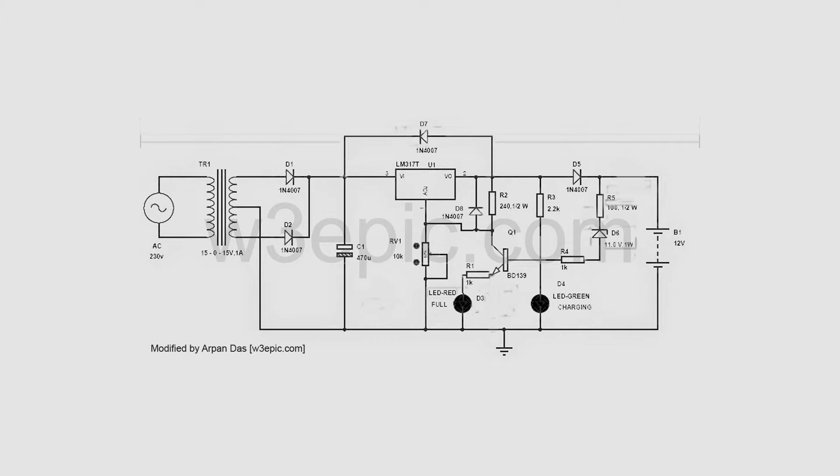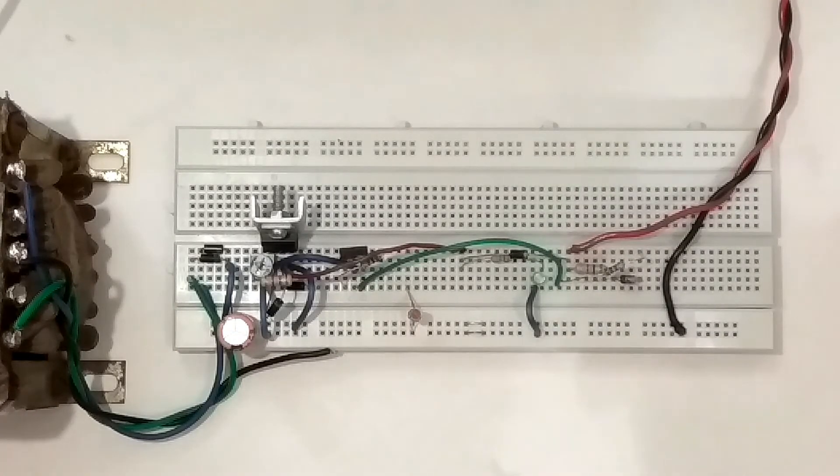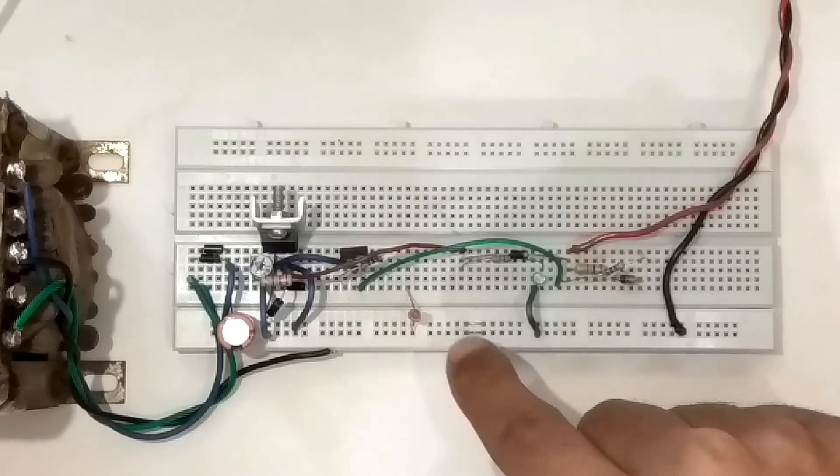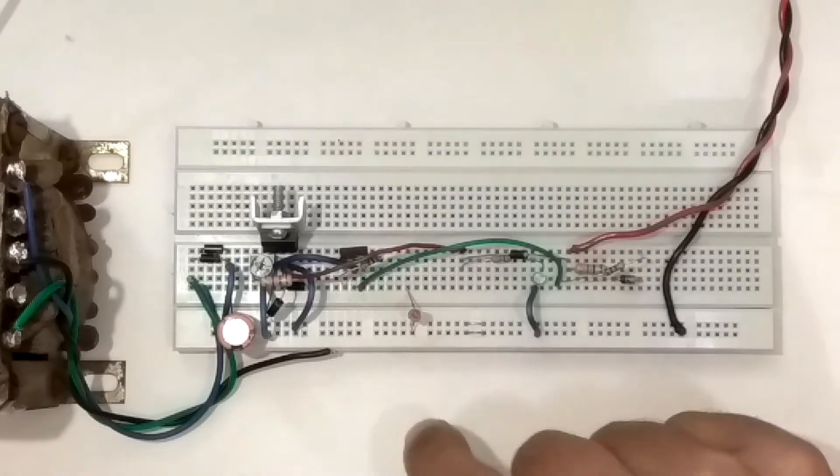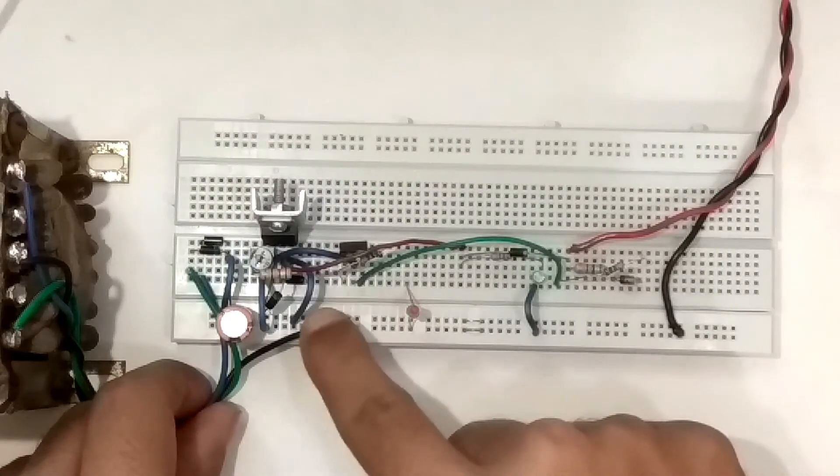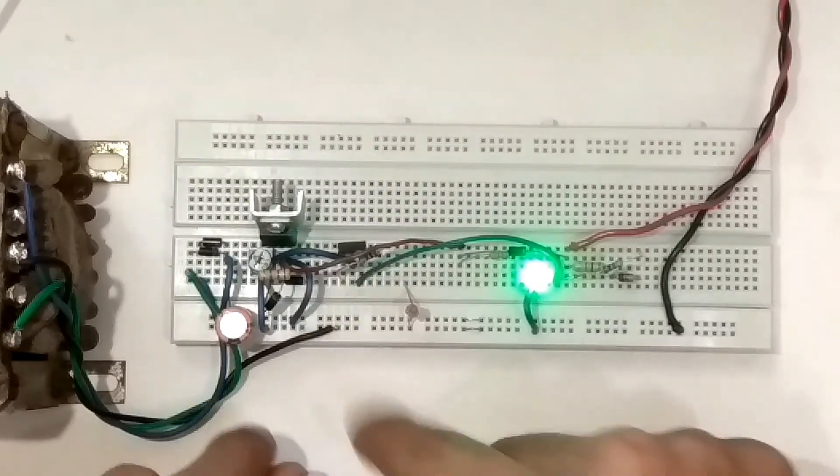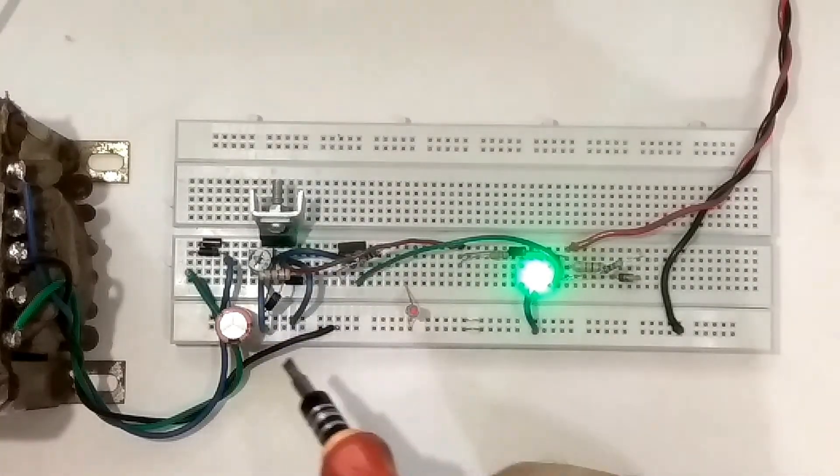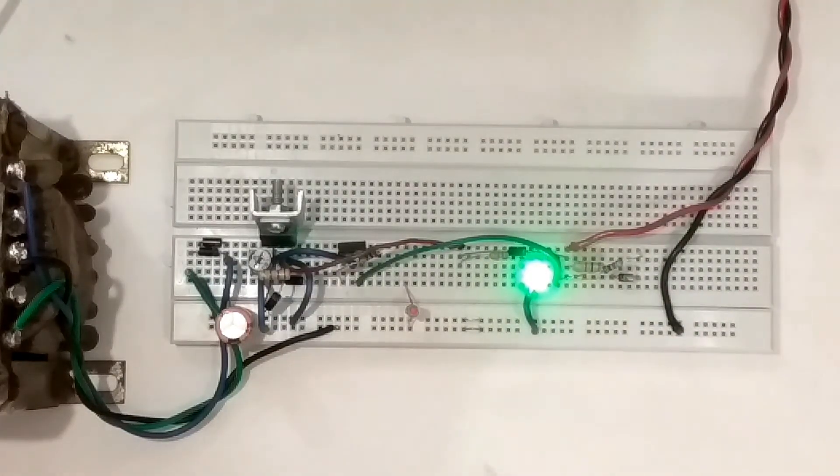This is the implementation of 12 volt battery charger circuit. This circuit has a green LED and a red LED. The green LED is always on and the red LED glows just after reaching 13.5 volts and above. Let me connect ground. Now it's on. Here is a potentiometer you can adjust it to increase and decrease the voltage of output. Let me show you the outputs on multimeter.